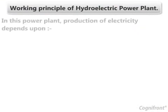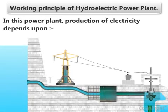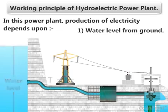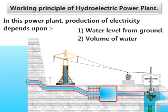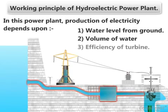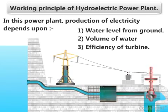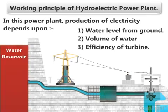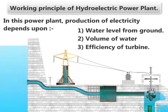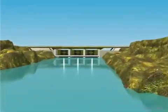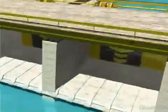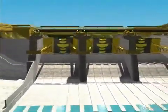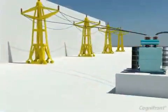The working principle of hydroelectric power plant. In this power plant, production of electricity depends upon the height of the water from ground level, the volume of water flowing per unit time, and the efficiency of the turbines. Hydroelectric power plants require a water reservoir, so these plants are constructed near big dams.